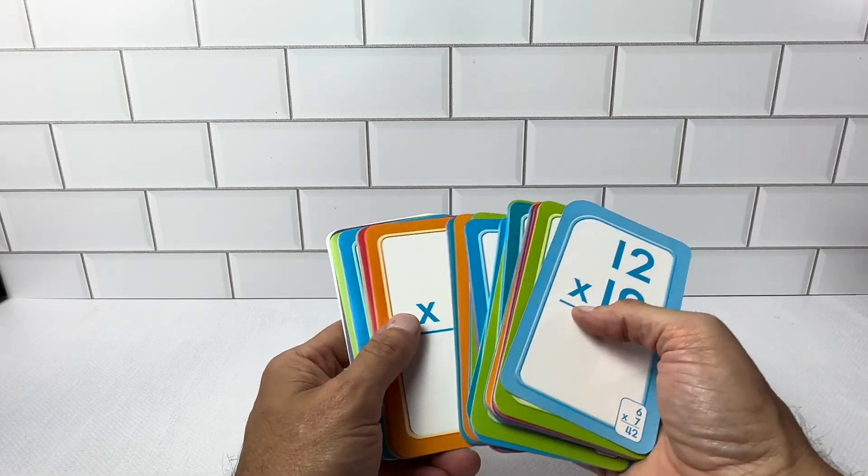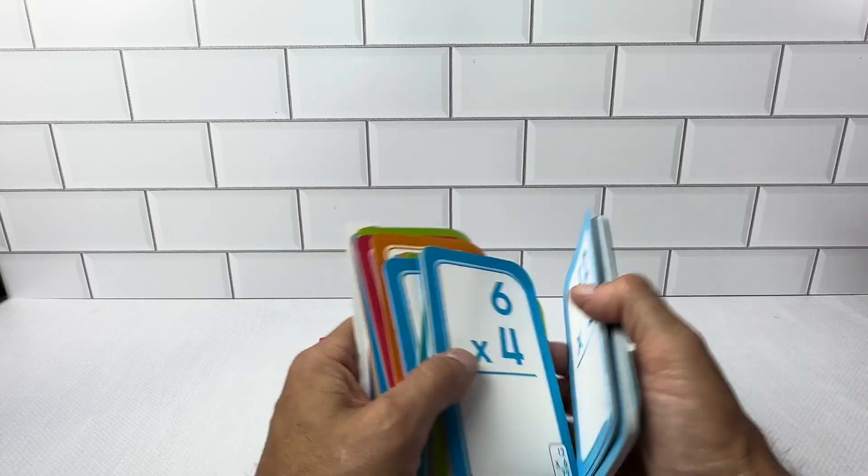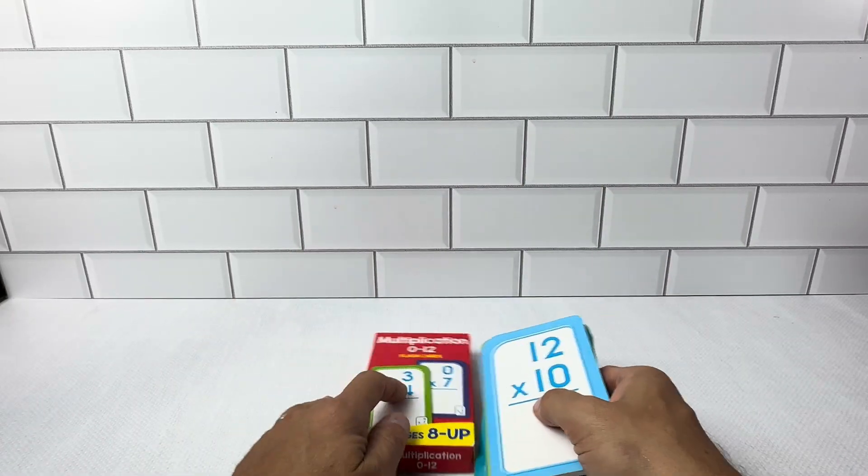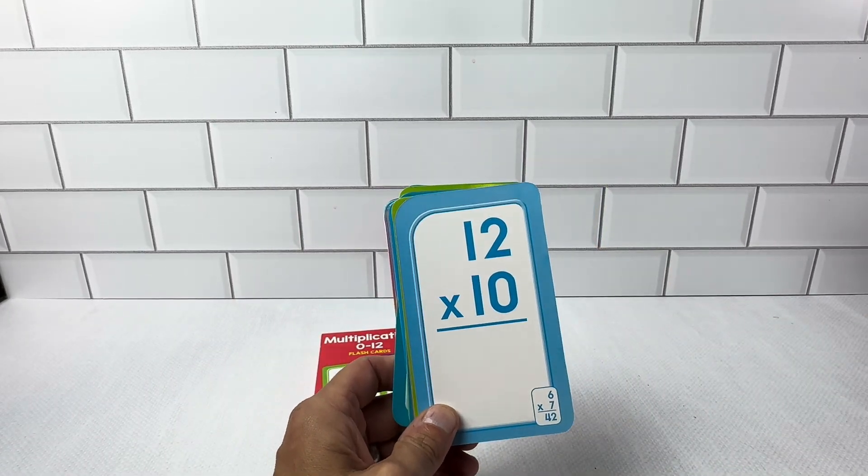But again, these multiplication cards are great. Nicely done in plastic. Nice different colors here, and again double-sided. The answer is on the back of each one. So these are just really great cards. Multiplication 0 to 12 flashcards. Highly recommend these.